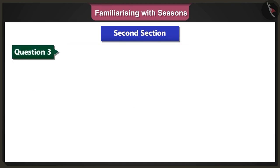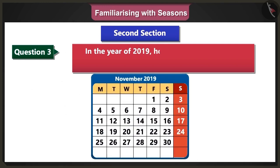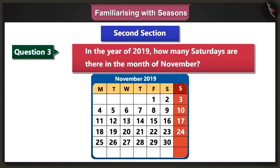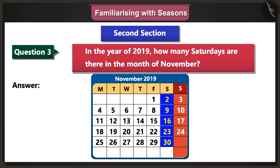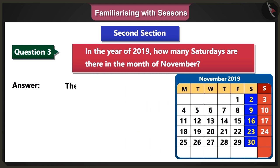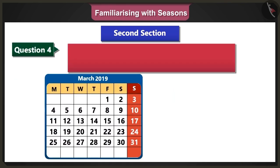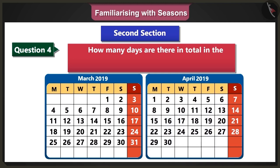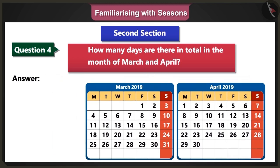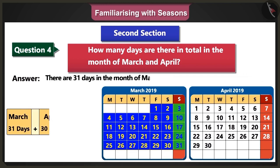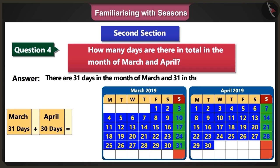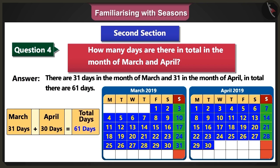Third question: In the year 2019, how many Saturdays are there in the month of November? Answer: In the year 2019, in the month of November, Saturdays come on the 2nd, 9th, 16th, 23rd and the 30th. Therefore, there are 5 Saturdays in this month. Fourth question: How many days are there in total in the months of March and April? Answer: There are 31 days in the month of March and 30 days in the month of April. When we add both, we get a total of 61 days.